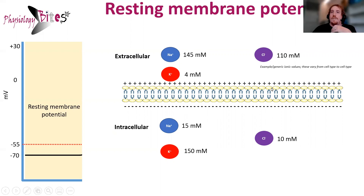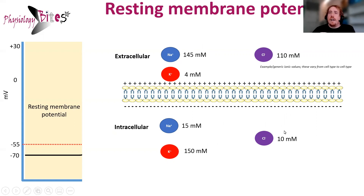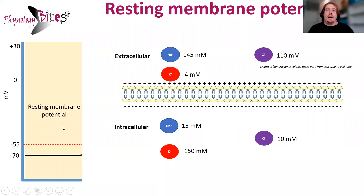We also have different permeability of the membrane to these ions. Potassium ions can much more easily leak out into the extracellular space, so that helps keep the inside of the cell more negative. The last thing which helps is that a lot of the proteins inside of the cell also contribute a negative charge. So that's why our resting membrane potential is negative, for those three reasons.